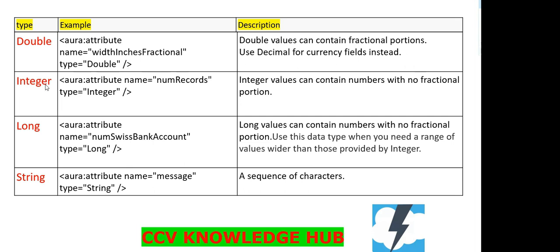The next one is Integer. Integer values can contain numbers with no fractional portion. The syntax is: aura:attribute name equal to 'numberOfRecords', type equal to Integer.